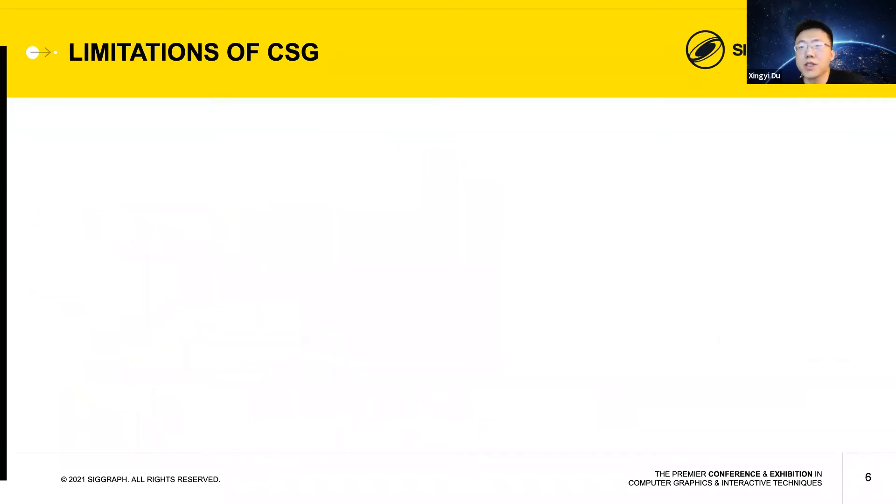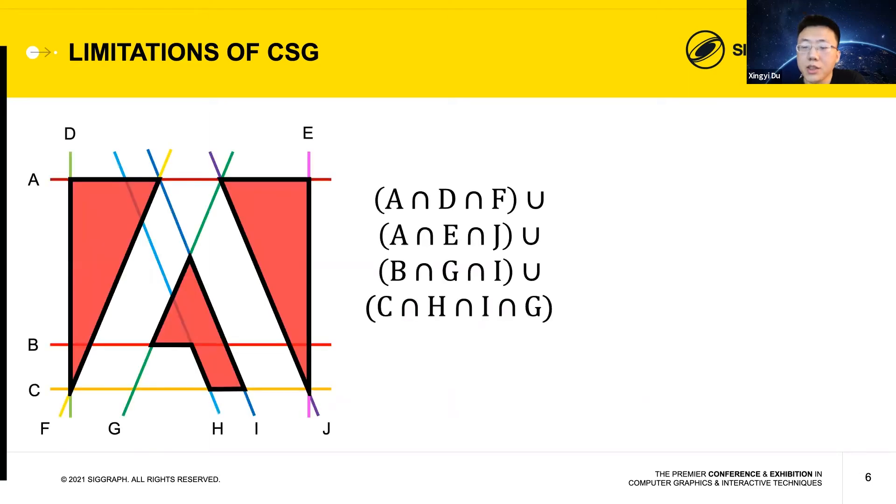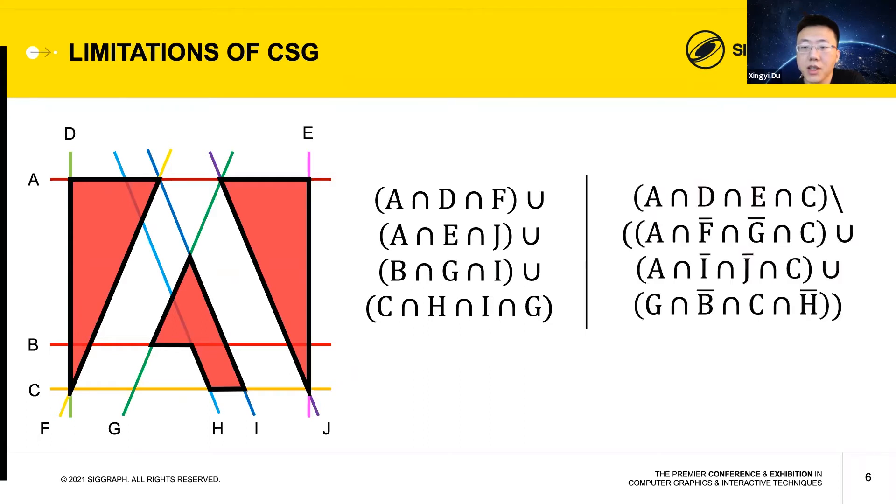Another major limitation of CSG is that Boolean expressions can get complex quickly with increasing number of half spaces, such as this Adobe logo using 10 linear half spaces. Maintaining such a complex expression adds to the burden of the modeler. The third limitation is that the same shape often can be represented by many and drastically different Boolean expressions. The large possible space of Boolean expressions is another major challenge in reverse engineering CSG from other representations, particularly if the goal is to find a representation that is easy for humans to understand and edit.